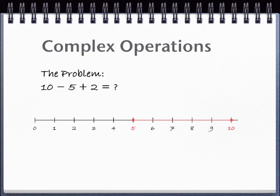So after moving 5 to the left, you're going to turn around and go 2 to the right. That gets you to 7, which is the answer to 10 minus 5 plus 2.